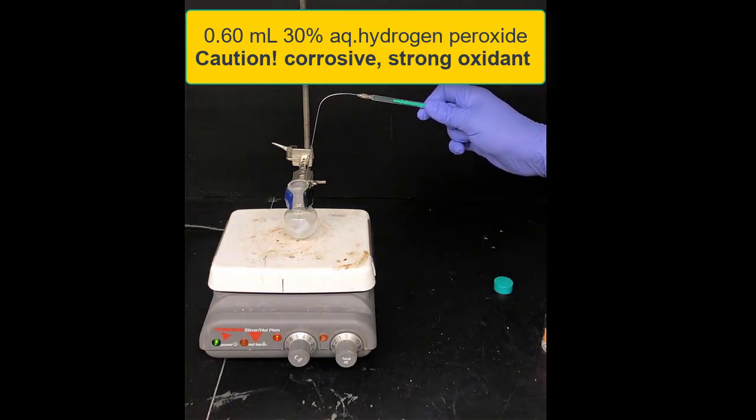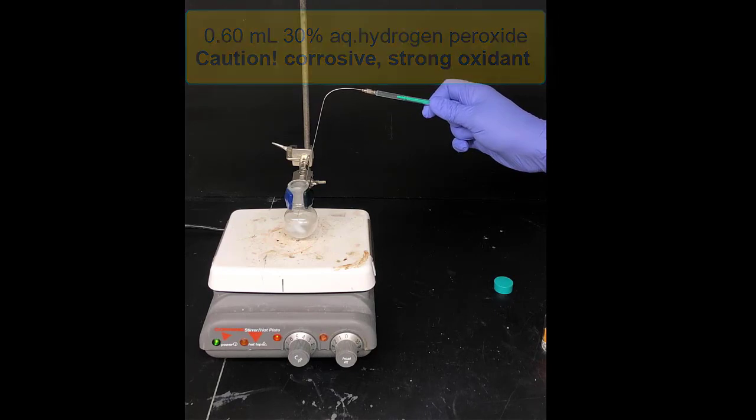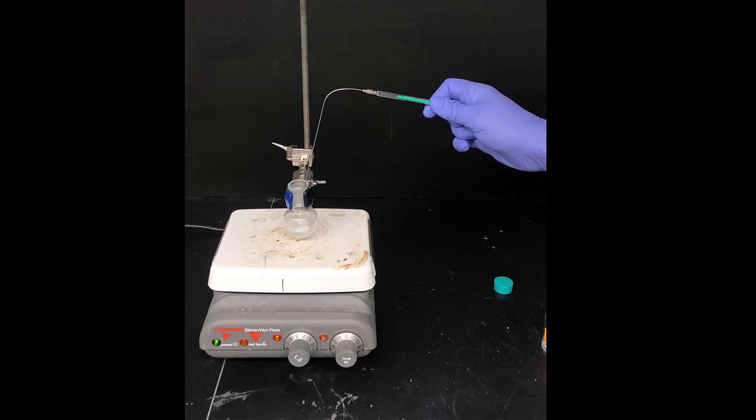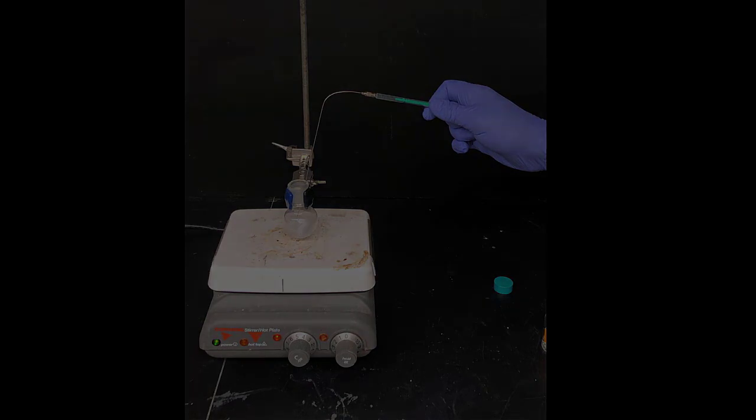Draw up 0.60 milliliters of the 30% hydrogen peroxide solution in a syringe and needle. Be sure to use a clean syringe and needle and add that to the reaction mixture slowly over 10 minutes with stirring. The idea with adding it slow is that the reaction won't overheat prematurely.